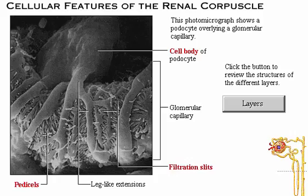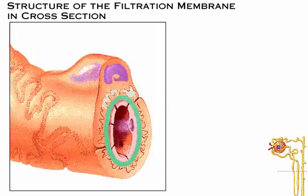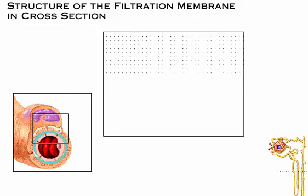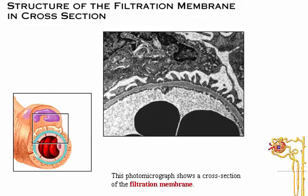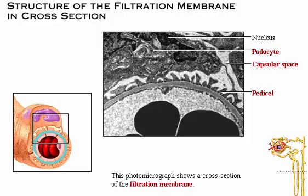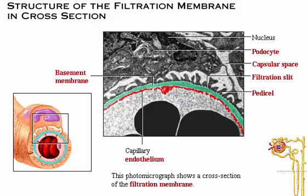This photomicrograph shows a cross-section of the filtration membrane. Starting from the top, you see a large podocyte with its nucleus and pedicels. The white areas are portions of the capsular space. Gaps between the pedicels are the filtration slits. Next, you see the basement membrane of the capillary endothelium, which separates the podocyte above from the capillary with its fenestrations below. You can also see portions of two red blood cells.